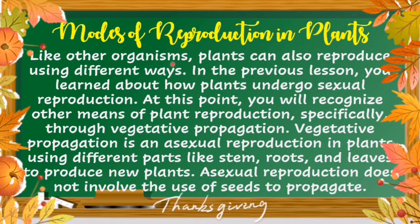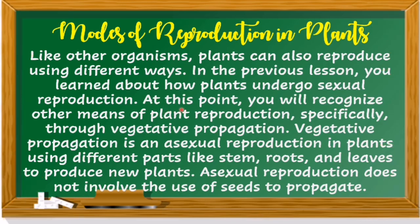Like other organisms, plants can also reproduce using different ways. In the previous lesson, you learned about how plants undergo sexual reproduction. At this point, you will recognize other means of plant reproduction, specifically through vegetative propagation. Vegetative propagation is an asexual reproduction in plants using different parts like stem, roots, and leaves to produce new plants. Asexual reproduction does not involve the use of seeds to propagate.